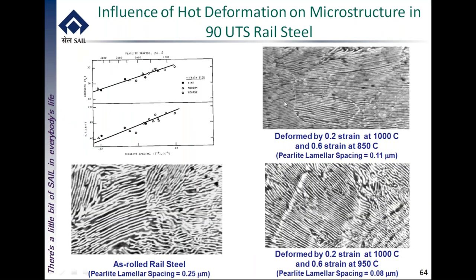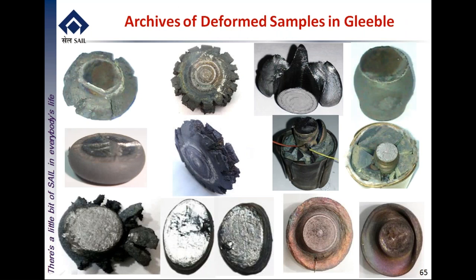A rail steel example showed that by refining the pearlite interlamellar spacing through deformation — reducing it from 0.25 micron (plant production) to 0.08 micron — a UTS improvement of up to 1000 MPa is achievable, making 110 UTS rail possible using the same alloy chemistry. From the archives, the Gleeble at SAIL has been used with many materials beyond steel: titanium, zirconium, and numerous other alloys. Bimetallic bonding and combustion testing have also been conducted.